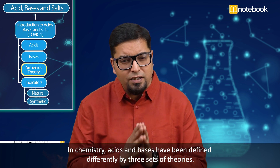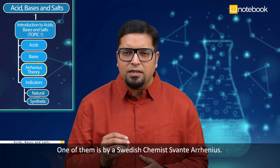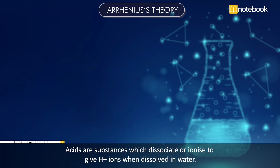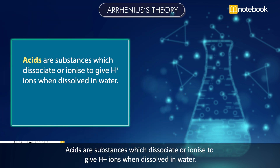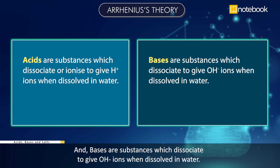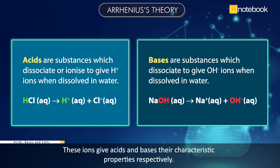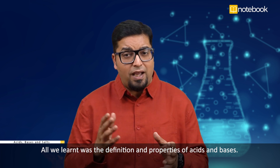In chemistry, acids and bases have been defined by three sets of theories. One is by Swedish chemist Svante Arrhenius. According to this theory, acids are substances which dissociate to give H⁺ ions when dissolved in water, and bases are substances which dissociate to give OH⁻ ions when dissolved in water. These H⁺ and OH⁻ ions give acids and bases their characteristic properties respectively.